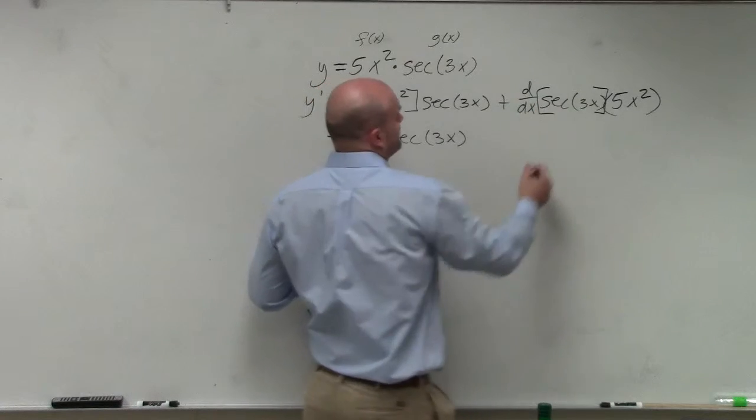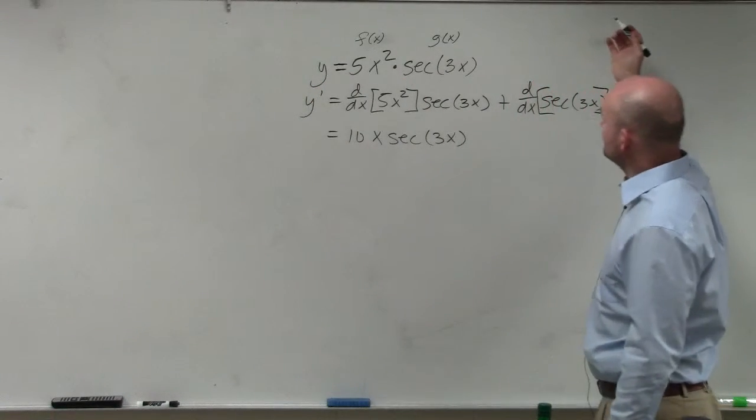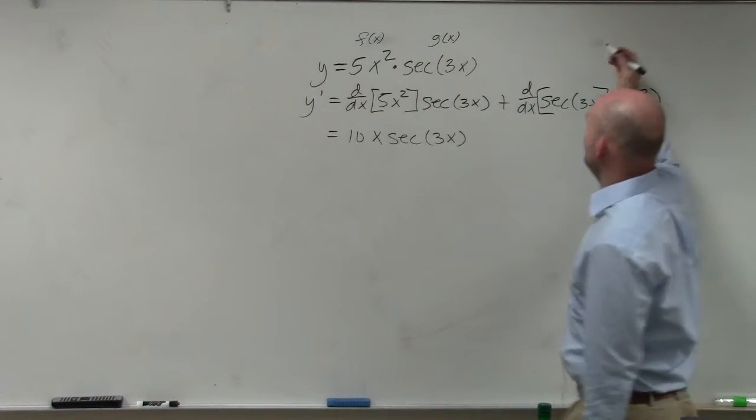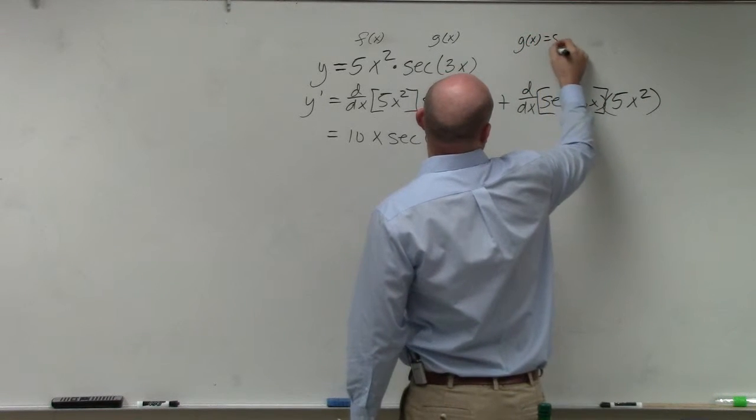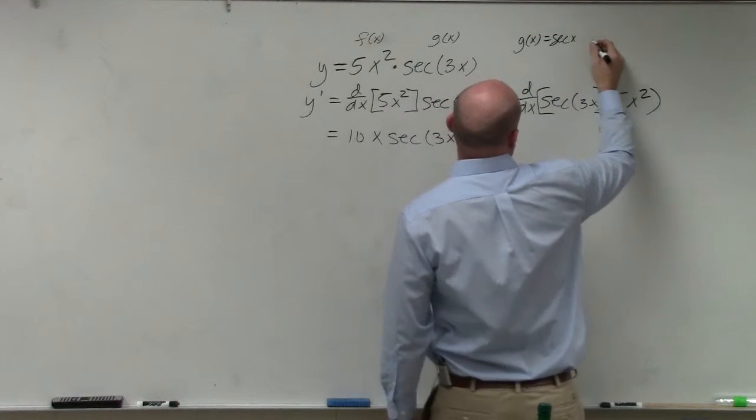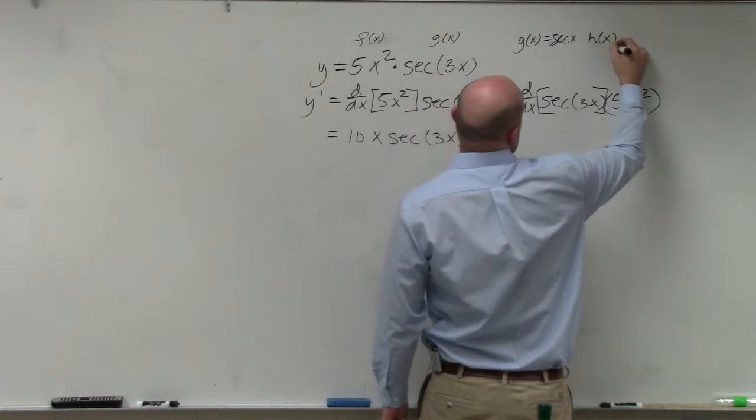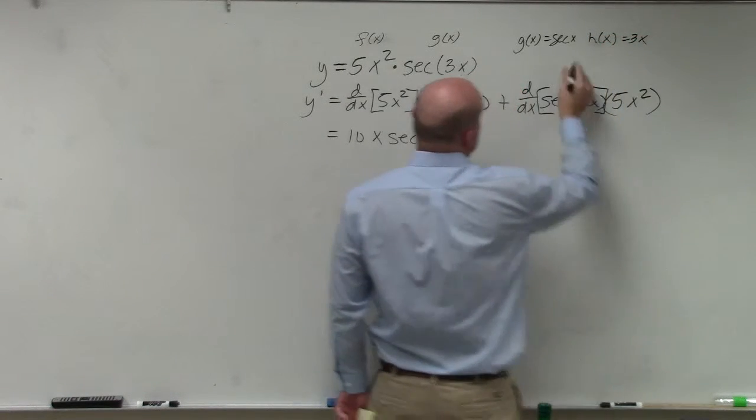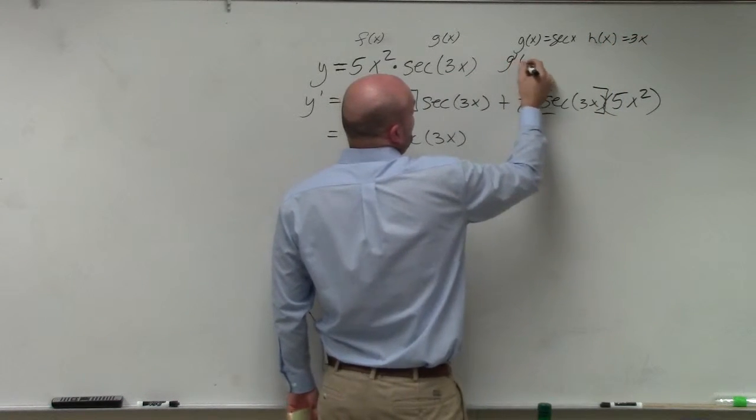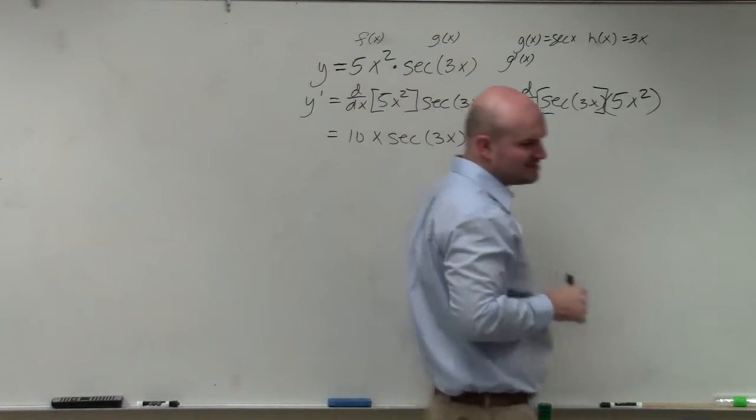So now we have to apply the chain rule. And I'll just use g and h of x. I'll just say g of x is equal to secant of x, and h of x is equal to 3x.